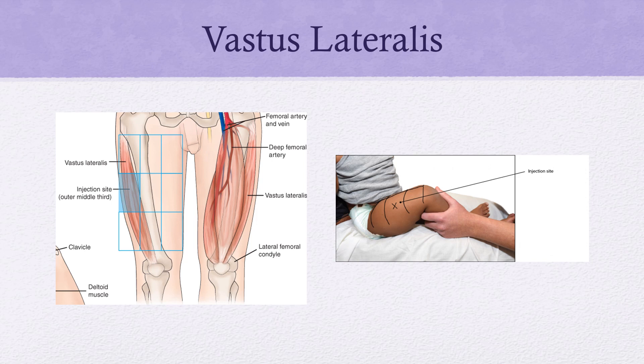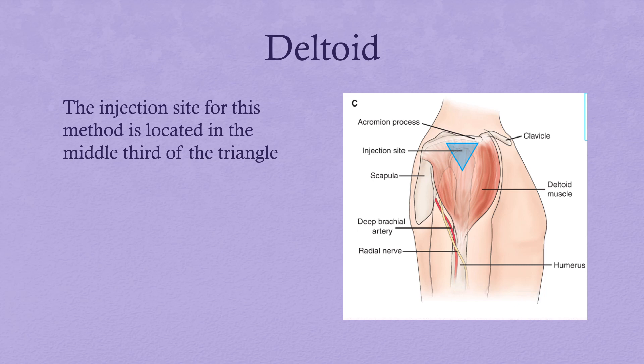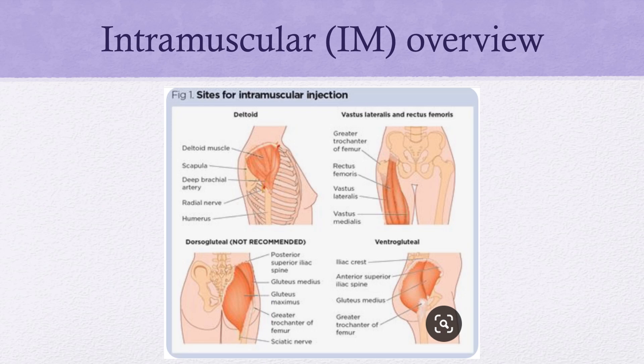The gauge of the needle depends on the viscosity of the solution. The deltoid has a very small muscle mass and can only handle up to 2 mL; you'll usually use a 1 to 1.5 inch needle. We don't really use the deltoid in infants or toddlers younger than three years because their muscle mass is so small. To recap: the deltoid holds no more than 1 mL; the vastus lateralis is preferred for infants up to one year; and the ventrogluteal is the preferred site for adults and can handle most volume.